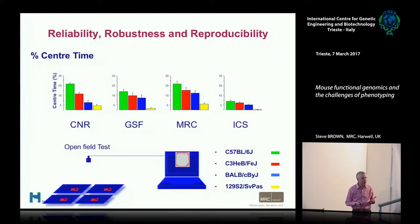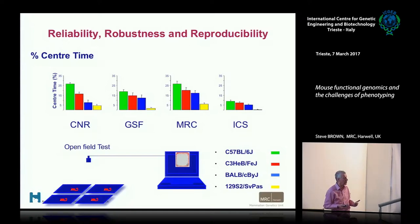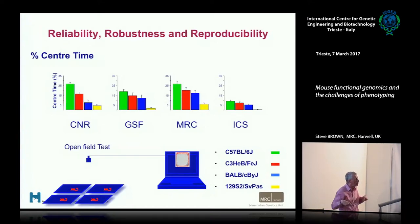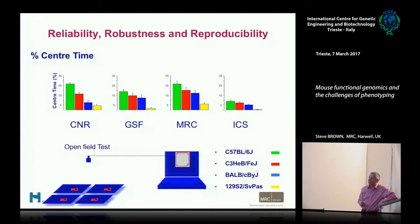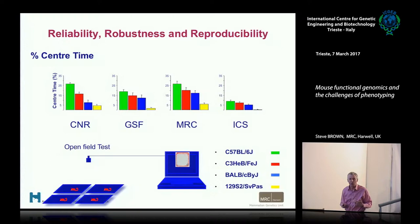Here's one example of what we did. Here's the open field test, for which we generated a standardized SOP. It's a measure of locomotion, and also of anxiety — measured by the amount of time a mouse spends in the center of the field, which is an anxiogenic environment. Normal mice tend to spend most of their time around the periphery. We took various inbred strains with different profiles and looked at percentage center time across a number of centers. As you can see, the test is relatively robust — the order of inbred strains is the same in different centers.